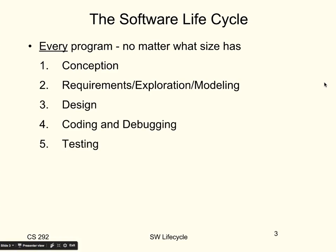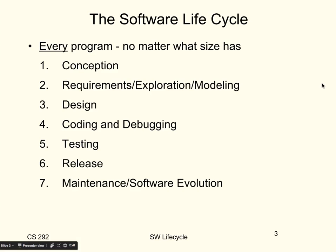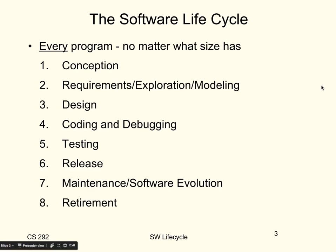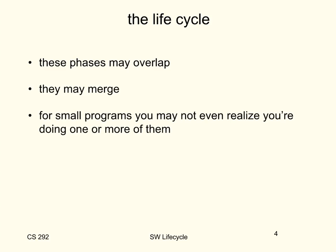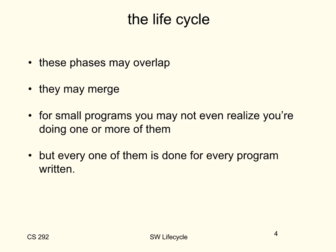Then you'll have to do testing. Testing and debugging are different, although they tend to typically overlap, particularly unit testing. Once you are satisfied that everything's done, you'll release the product. It then enters the maintenance and software evolution phase, where you might add new features, and you fix bugs that escaped from testing the first time. Eventually it retires, because you don't need it anymore — there's a new version, or there's a new type of software that does something better. The phases may overlap, particularly for smaller programs — they may merge. For small programs, you may not even realize you're doing one or more of the phases, but you will do all of those phases for every single program you write, including just programs for classes.